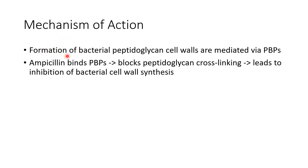Formation of bacterial peptidoglycan cell walls are mediated via proteins called penicillin binding proteins, or PBPs. Ampicillin binds to PBPs and blocks peptidoglycan cross-linking. This leads to inhibition of bacterial cell wall synthesis.